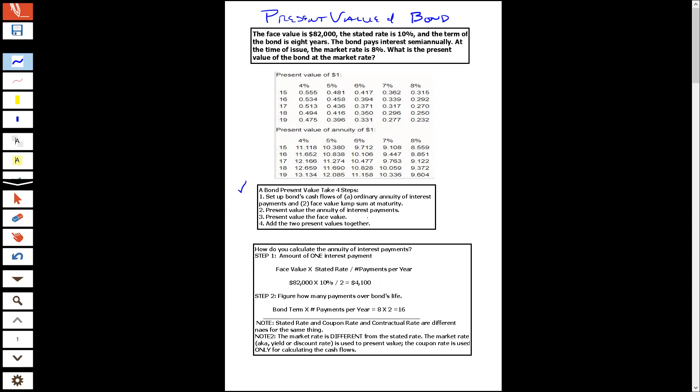So these are regular debenture bonds. And this will be the only type of bond in intro to financial accounting that you will have to present value. So then you'll present value the annuity interest payments, present value the face value, and then once you have the two present values, you just add them together. And that is the present value.